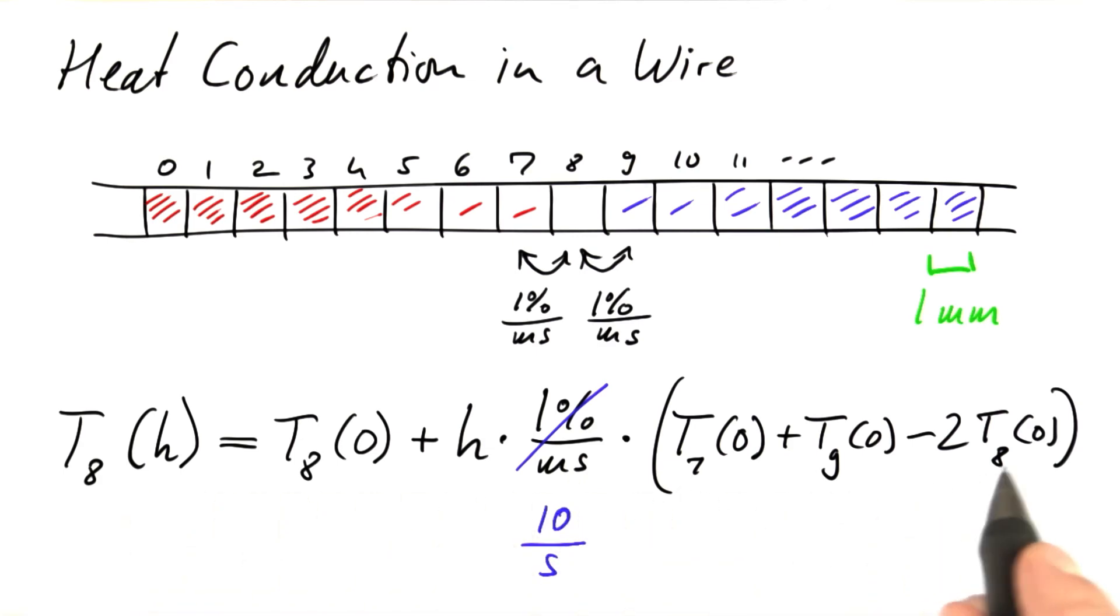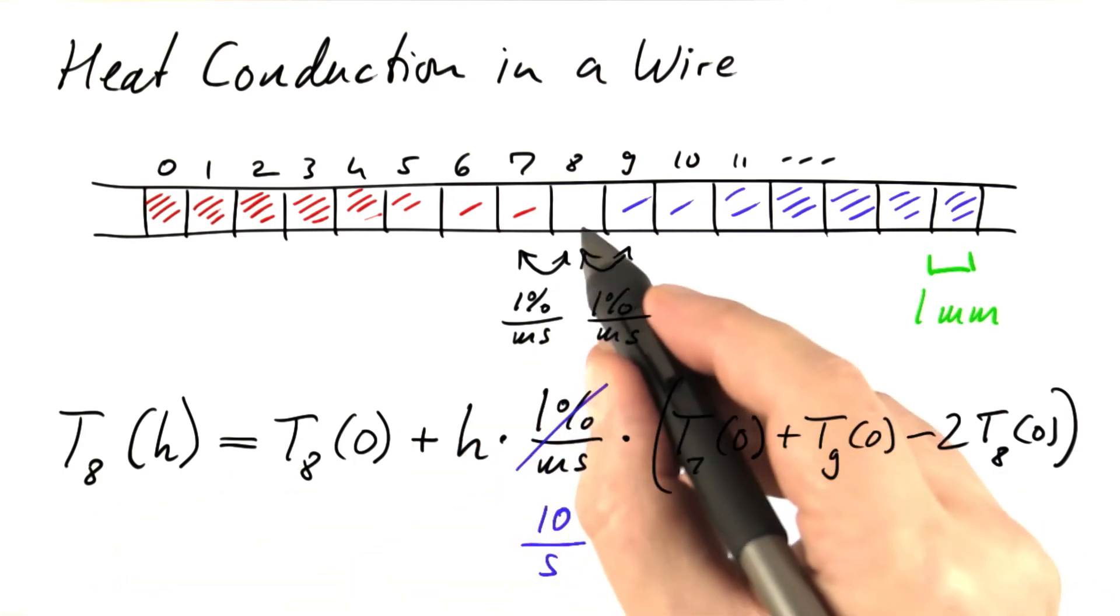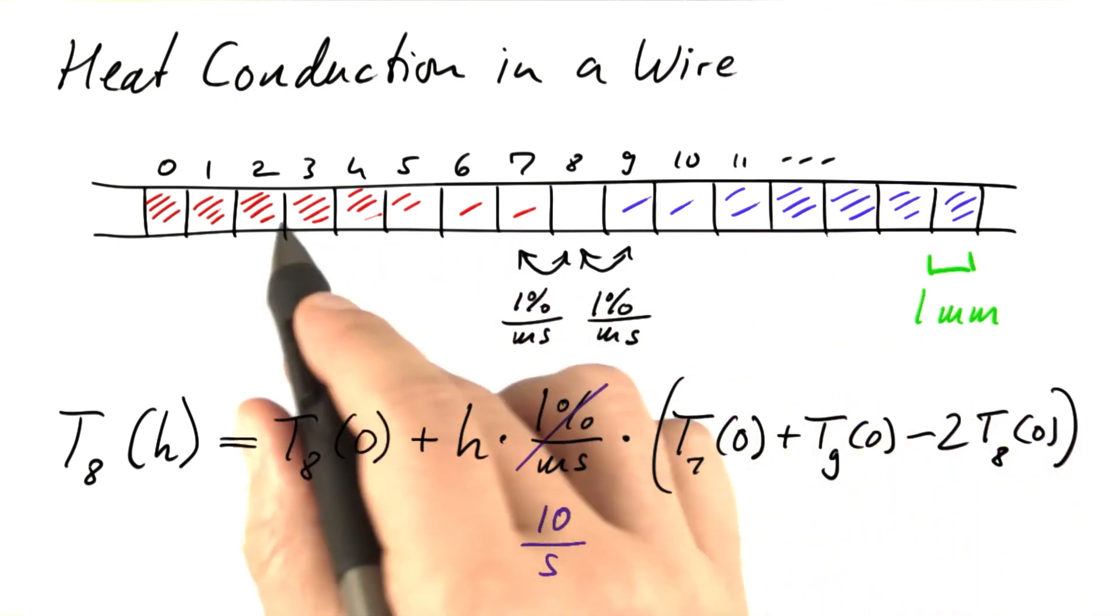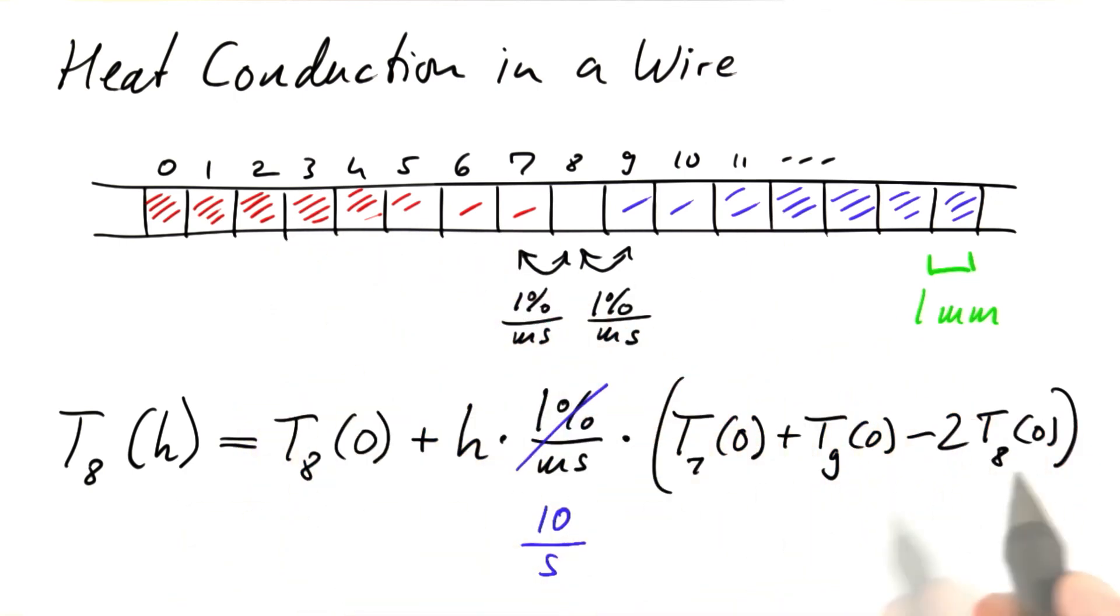So now we have an equation for the temperature of compartment number eight after one time step. Of course, this works similarly for all other compartments. You just change the numbers. It's about the left neighbor, the right neighbor and ourselves.